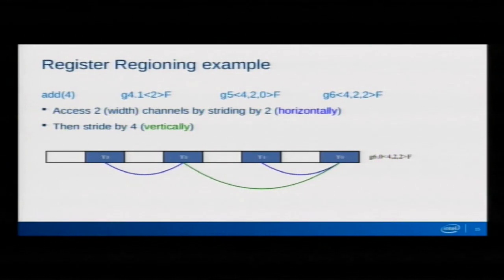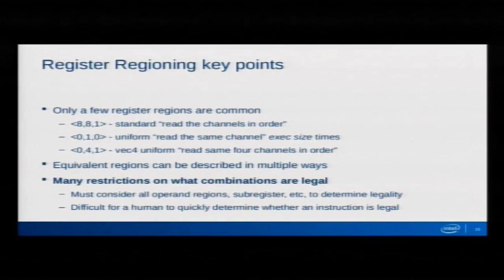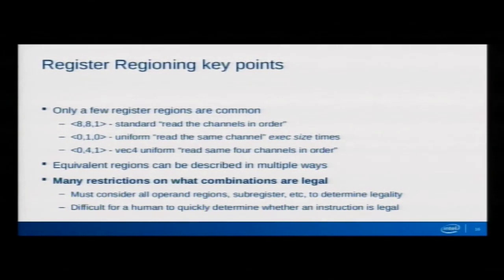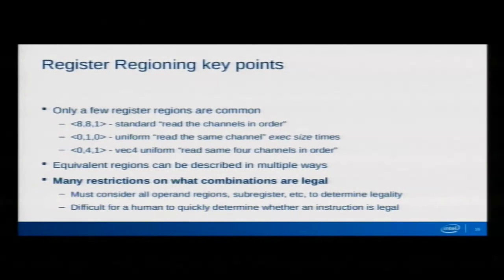You can do some pretty complex things with register regioning, but the good news is that even with all that flexibility, we use very little of it. There are only maybe three regions that are commonly used: the 881, which just reads every channel consecutively; the 010, which is like a uniform — accessing the same value in every channel. There are also some weird warts where equivalent regions can be described with different parameters, and most frustrating is the myriad of restrictions on what you can do.